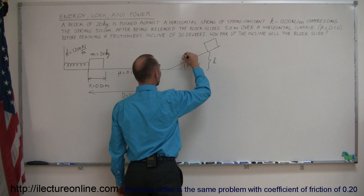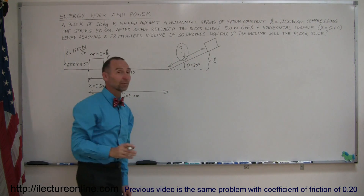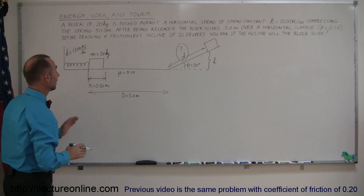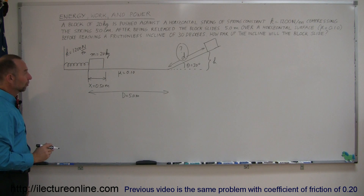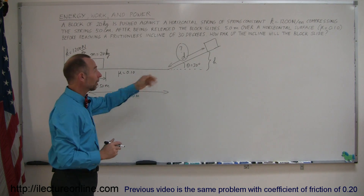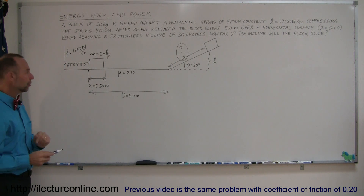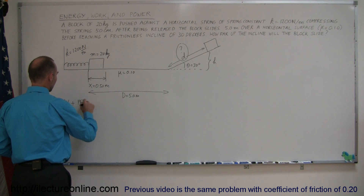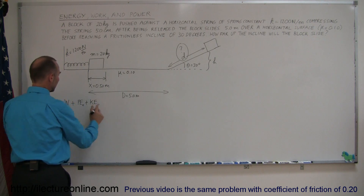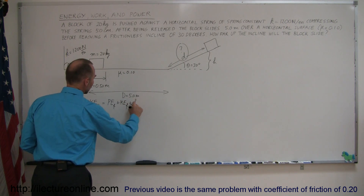That means the block has slid a distance d up the incline, and that is what we're looking for — the distance the block slides up the incline. Assuming the block doesn't lose all of its energy overcoming friction as it slides over the horizontal surface. If it doesn't make the incline, we'll probably end up with a negative answer. The equation we're going to use says: work plus initial potential energy plus initial kinetic energy equals final potential energy plus final kinetic energy plus any heat lost in the process.